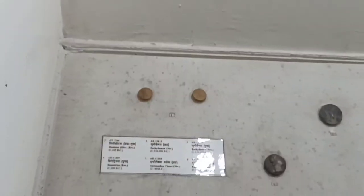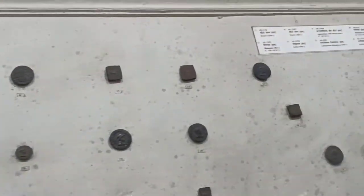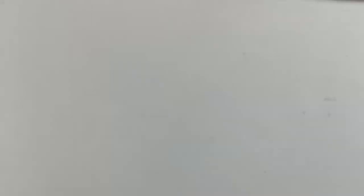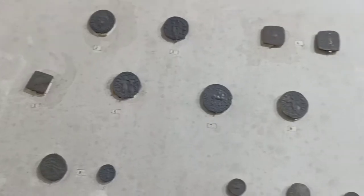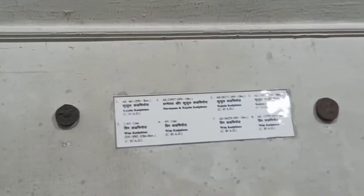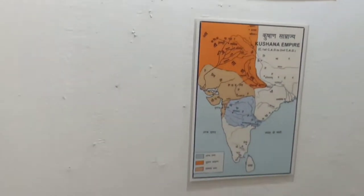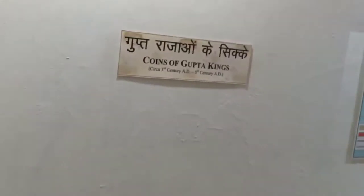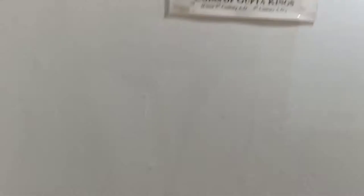Now we are going to the next section. This is the collection of the Shakh and Pallav, also given here. Then we are going to the Raja Kushan Kala — how Kushan Kala was created and how the Kushan empire was established in that era.